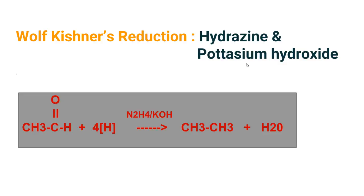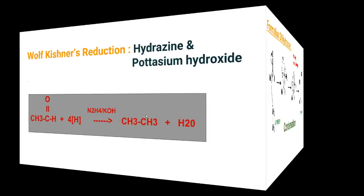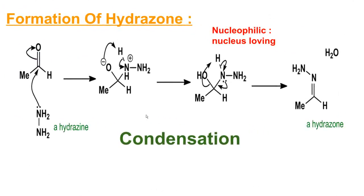Now let's look at the Wolf-Kishner reduction reaction. In this reaction, hydrazine (N2H4) and potassium hydroxide (KOH) are the reagents used to reduce carbonyl compounds into alkanes. For example, acetaldehyde is reduced into ethane. This reaction is carried out in basic medium. The carbonyl compound is first treated with hydrazine to form a hydrazone, and then the hydrazone upon heating in the presence of base produces the hydrocarbon.